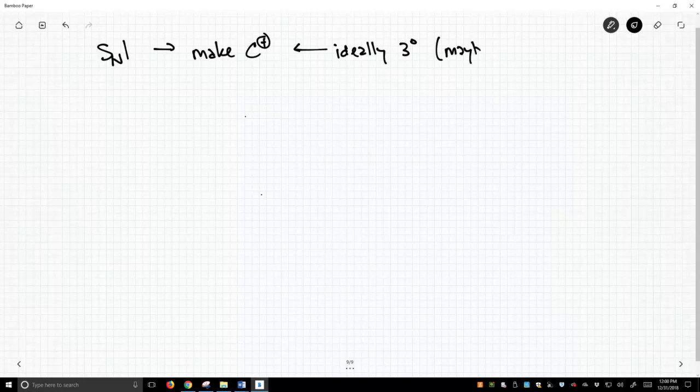Maybe secondary. I kind of have a heavy bias against carbocations, so I'm only normally in favor of making tertiary carbocations. So let's see how this works, so we can use an SN1 reaction to make an ether.